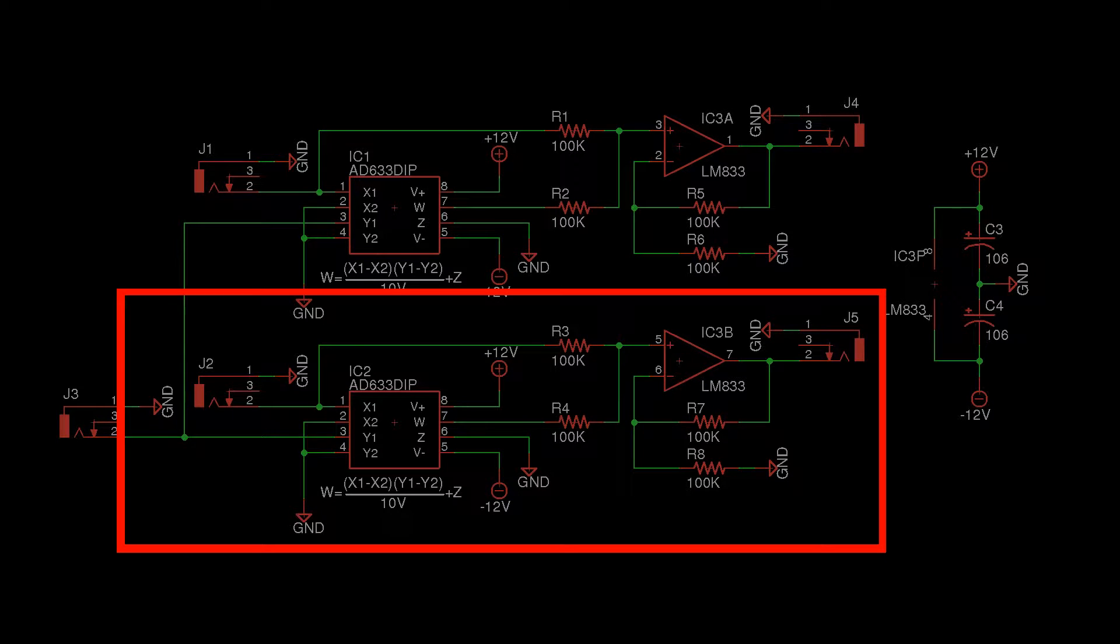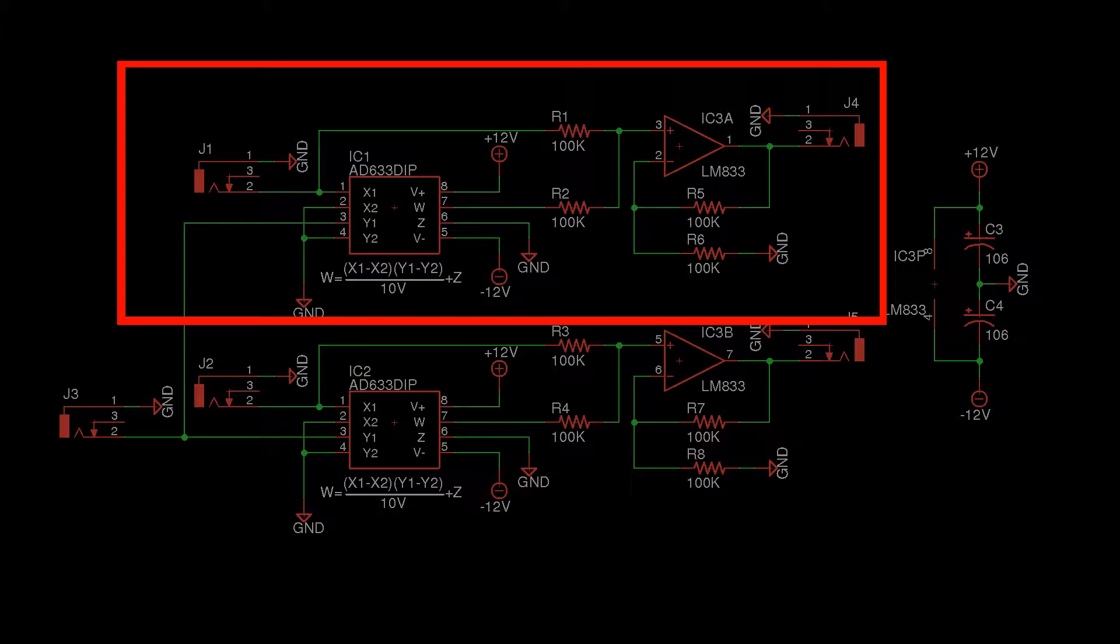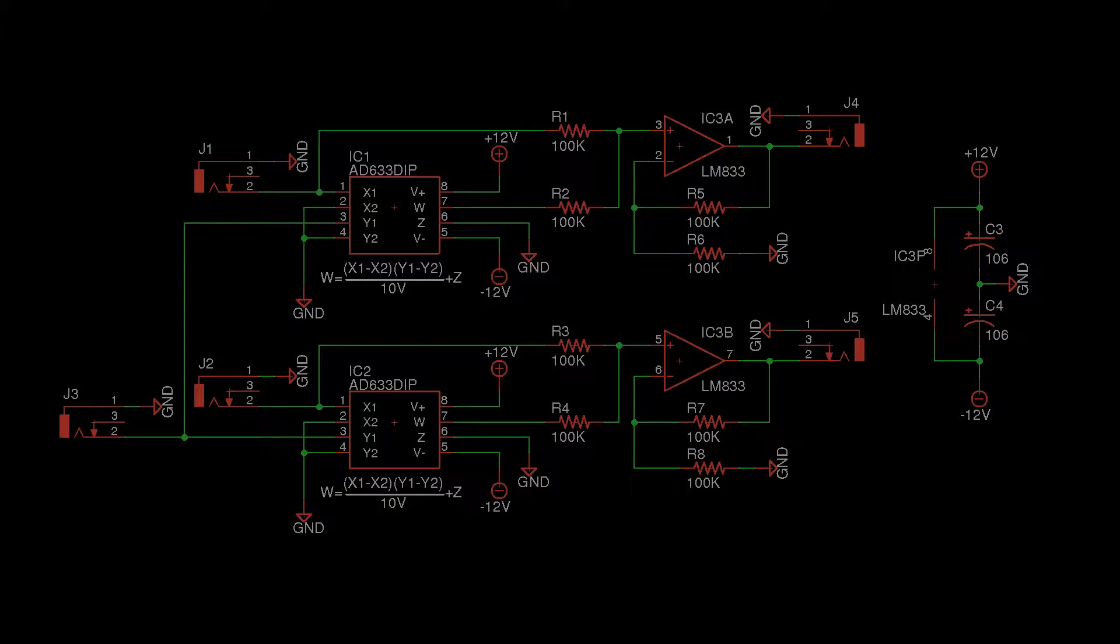This circuit uses two sets of voltage controlled amplifiers to wrap the sound around a circle. One of them for the sine wave and the other for the cosine wave. The sound comes in here,